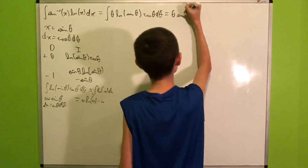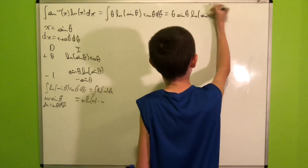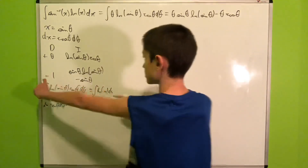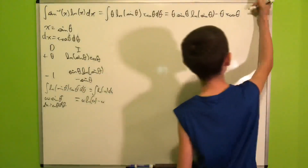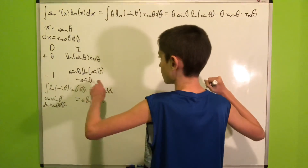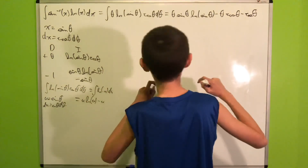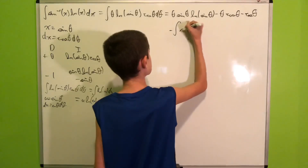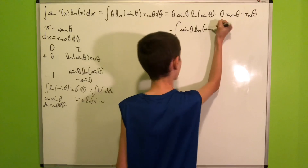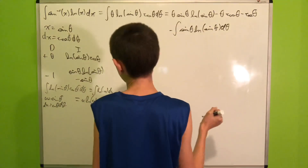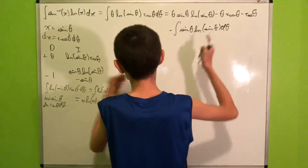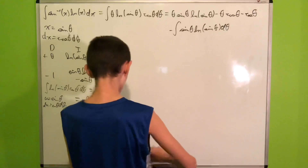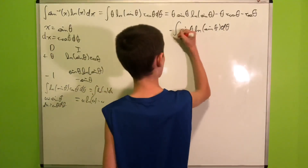Applying integration by parts, we get θ·sin θ·ln(sin θ) − θ·sin θ, and then we need to integrate sin θ·ln(sin θ) − sin θ. The integral of −sin θ gives positive cos θ... actually wait, let me check — yes, that gives negative cos θ from integrating sin θ. So we end up with a term involving the integral of sin θ·ln(sin θ) dθ, which we'll need to handle separately.